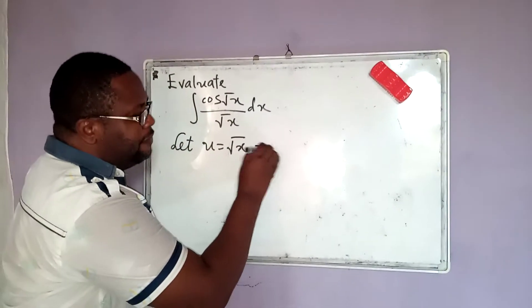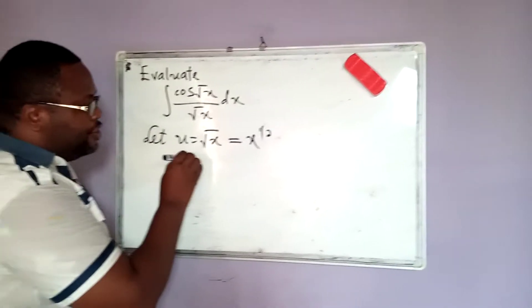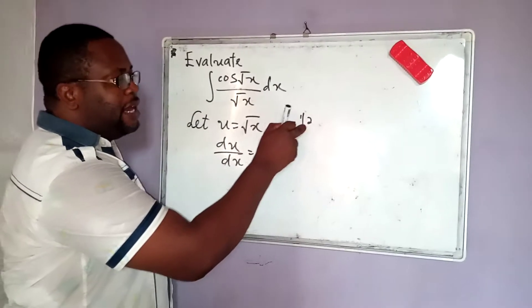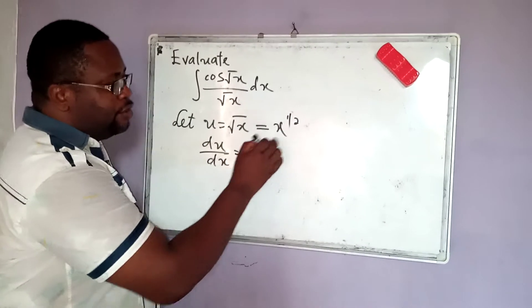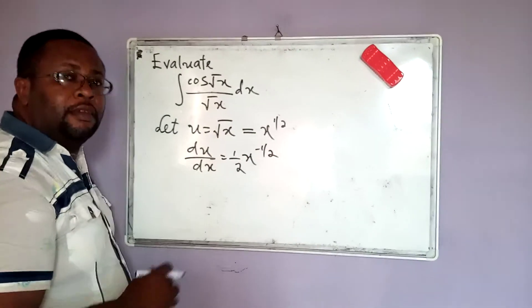Now, square root of x is the same thing as x to the power half. And when I differentiate that, du by dx, you bring down your half, I have 1 over 2, half minus 1 will simply give me minus half.